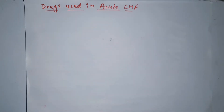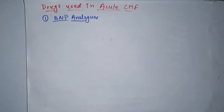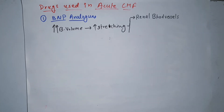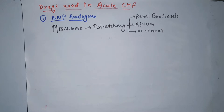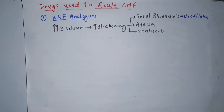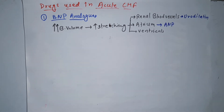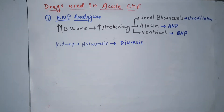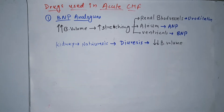Let's talk about the drugs used in acute CHF. First, BNP analogues. Whenever there is an increase in blood volume, there is increased stretching of renal blood vessels, atrium, and ventricles. This stretching causes secretion of urodilatin by renal blood vessels, ANP by atrium, and BNP by ventricles. These substances cause natriuresis in the kidney, leading to diuresis, which decreases blood volume.